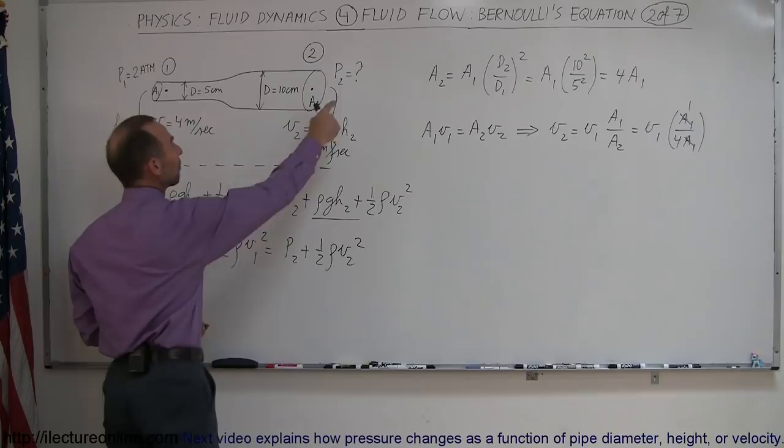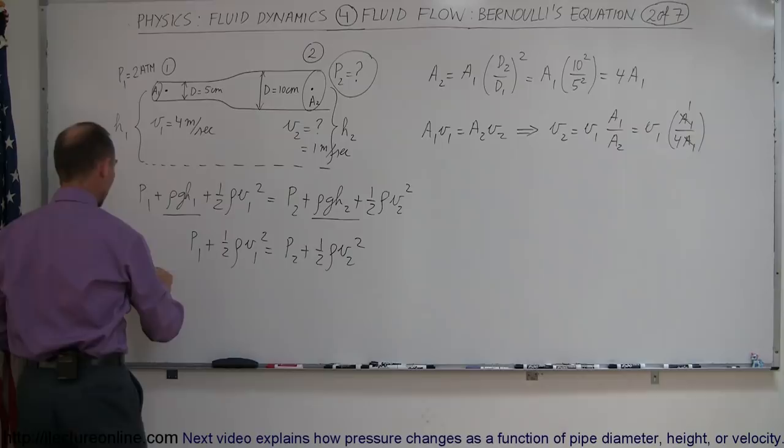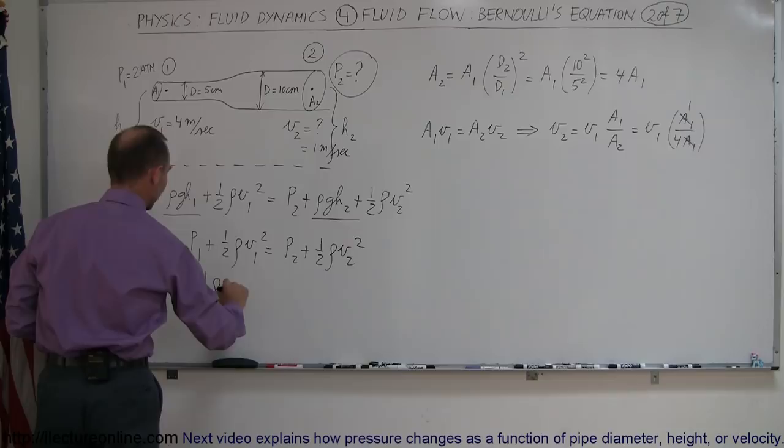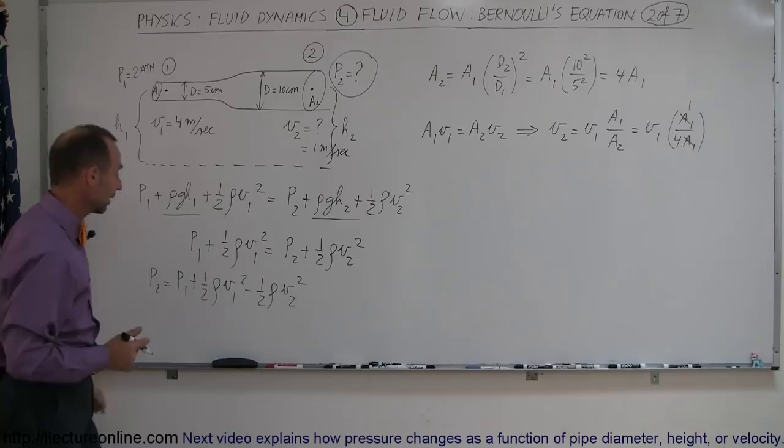Since I'm looking for P2, that's ultimately what I'm after right here, I can then solve this equation for P2. I can move the 1 half rho V2 squared to the other side and flip the equation around. So now I end up with P2 is equal to P1 plus 1 half rho V1 squared minus 1 half rho V2 squared. Now I think I'm ready to plug in some numbers.